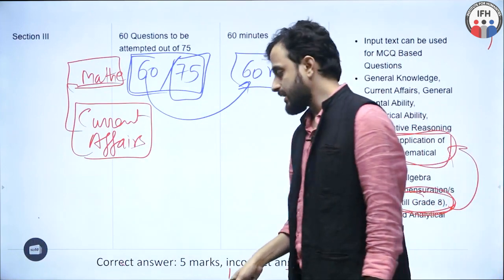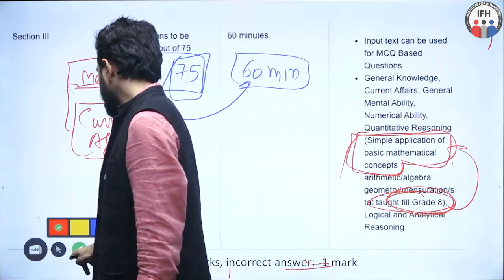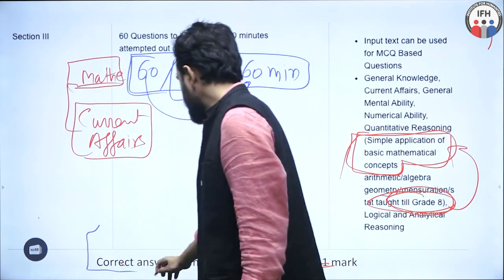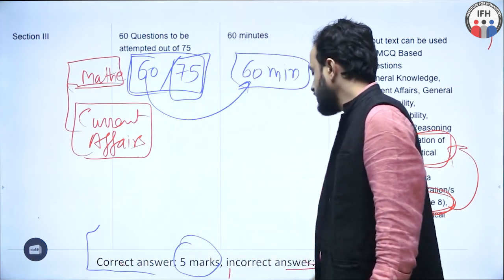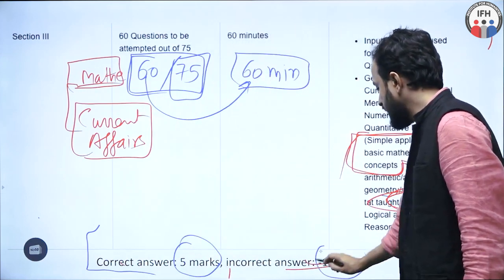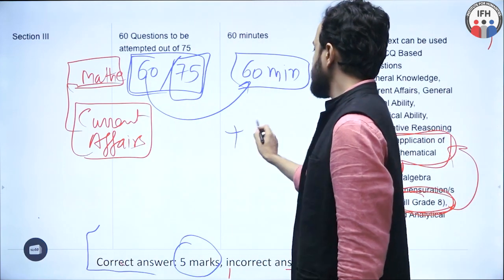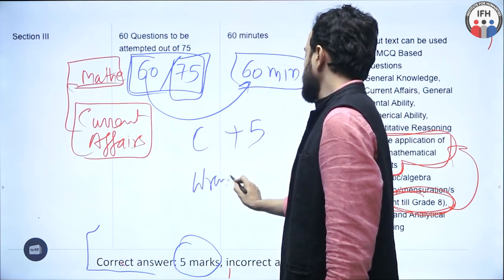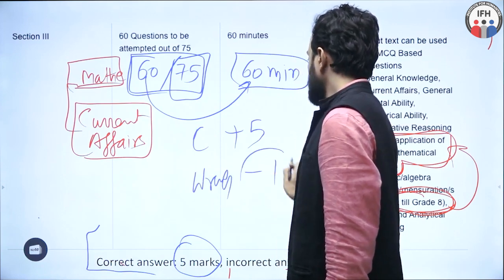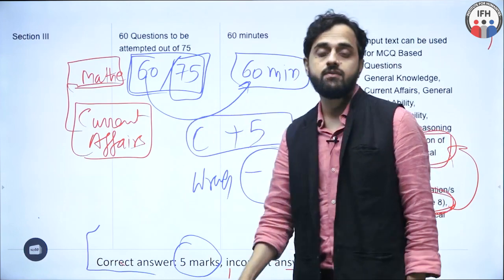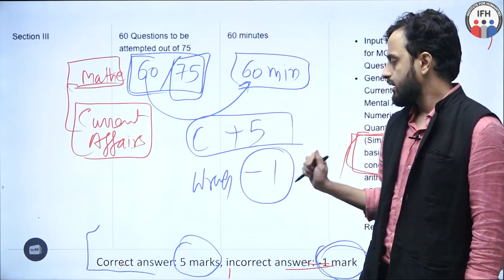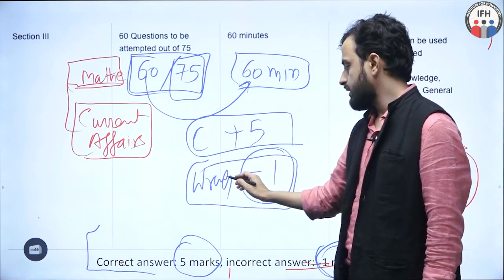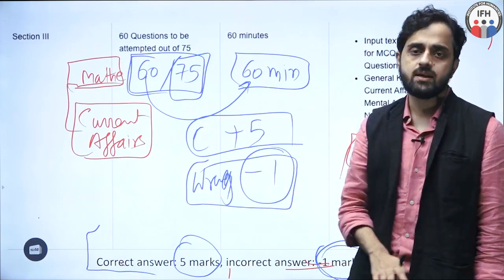Yes, there is negative marking in the examination. For every correct answer you will get 5 marks, and for every wrong answer you will get minus 1 mark. So do not attempt blind guesses, but do not leave every question either. Be aware of the negative marking.